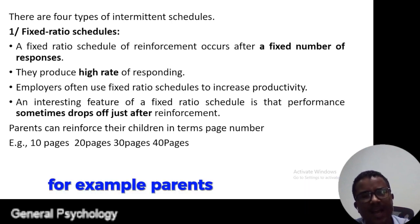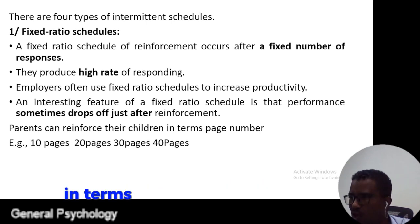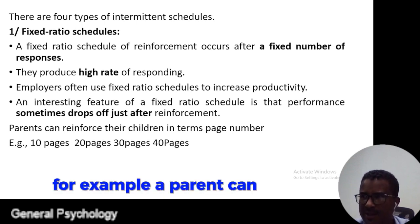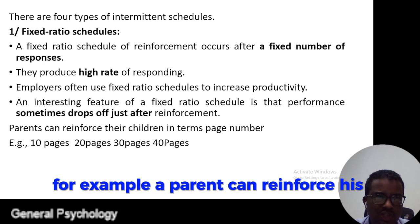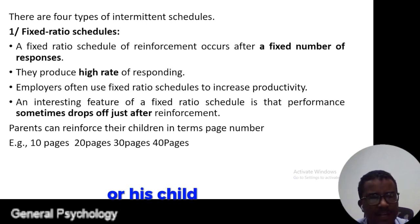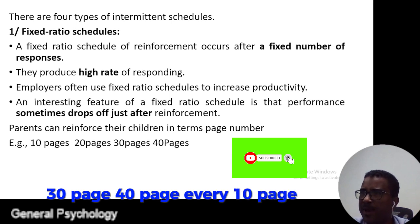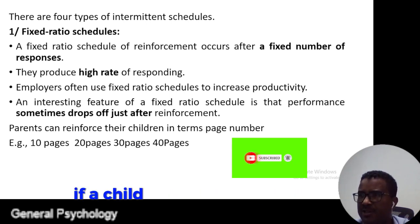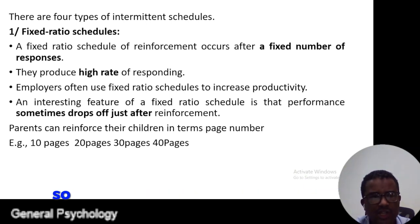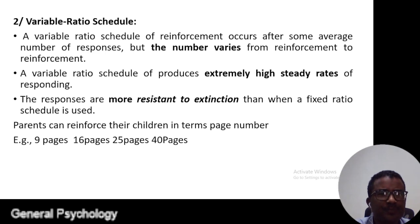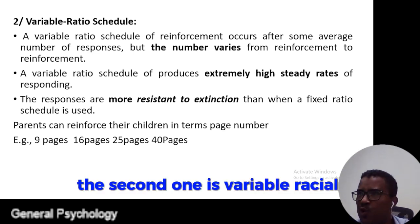For example, parents can reinforce their children in terms of reading page numbers. A parent can reinforce their child every 10 pages — at 10 pages, 20 pages, 30 pages, 40 pages. Every 10-page interval, if the child reaches the expected pace, he or she will be rewarded. Such reinforcement is called the fixed ratio schedule.